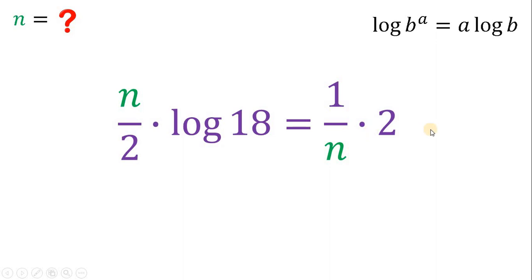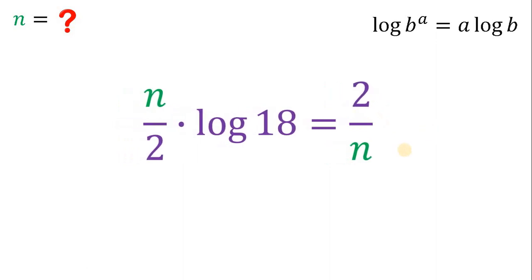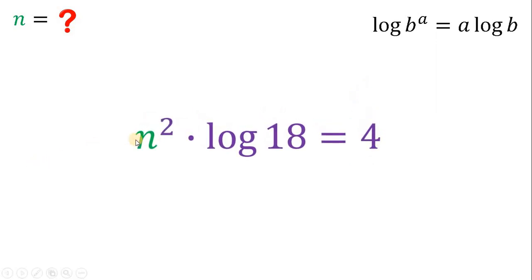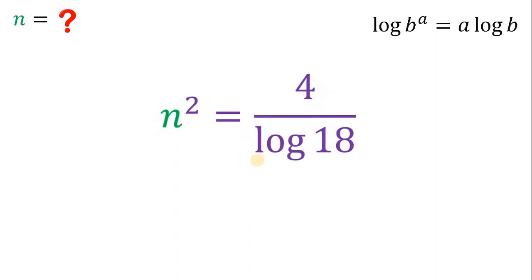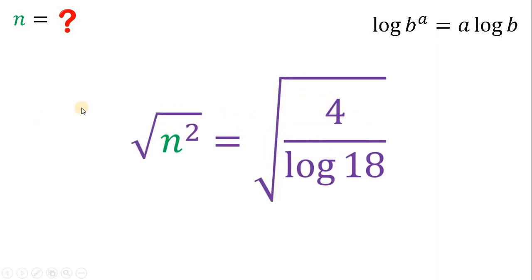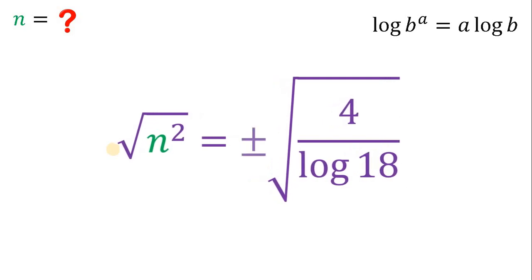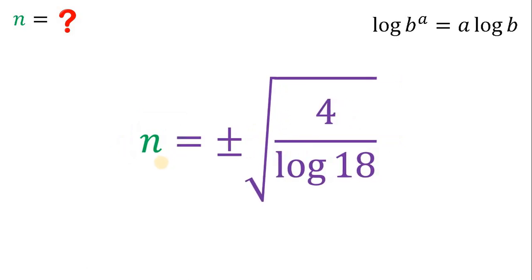Now let's simplify: 1 over n times 2 gives us 2 over n. Let's clear the fraction — multiply both sides by 2. This gives us n times logarithm of 18 equals 4 over n. Now let's multiply both sides by n. Since we want the value of n, we divide both sides by logarithm of 18. To solve for n, we take the square root on both sides. Taking the square root of n squared gives two possible values — positive and negative — so n equals positive or negative square root of 4 over logarithm of 18.